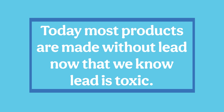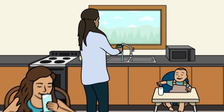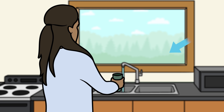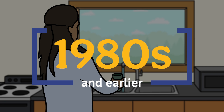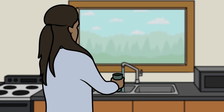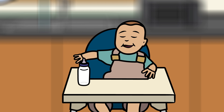Today, most products are made without lead, now that we know lead is toxic. However, past uses of lead still affect us today. Lead contamination in drinking water is a common source of lead exposure. Homes and buildings built in the 1980s and earlier may contain plumbing with lead pipes. Children can be exposed to lead if they drink water that passes through lead pipes, and babies can be exposed to lead if they drink formula that is mixed with contaminated water.